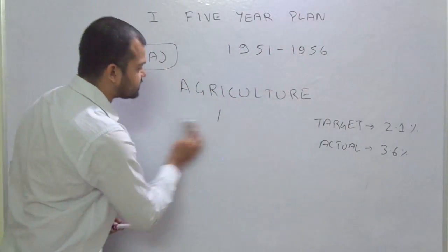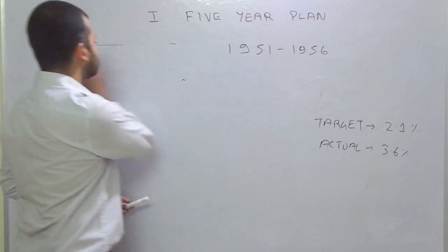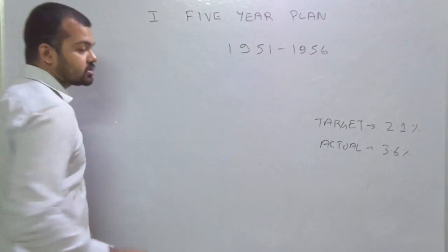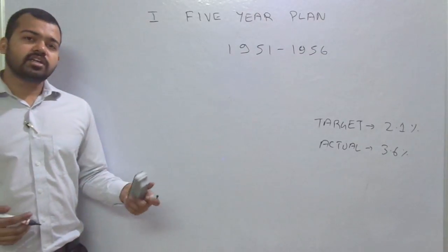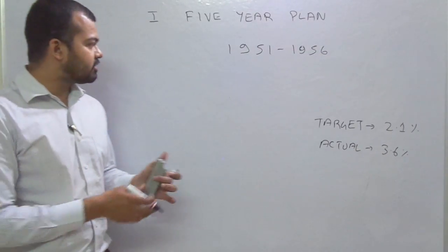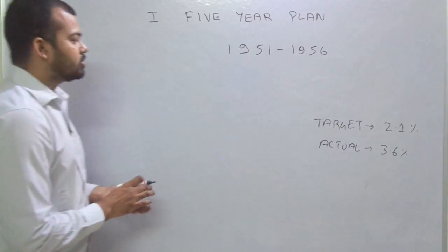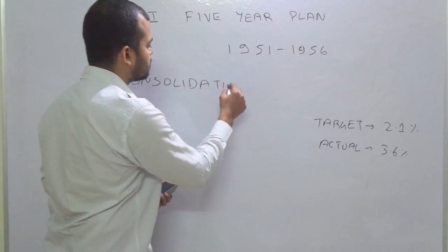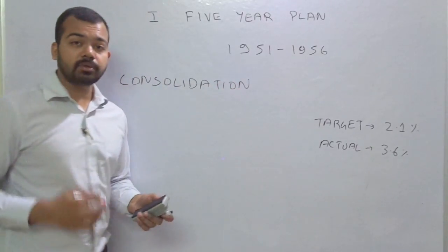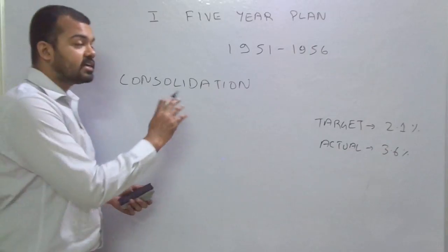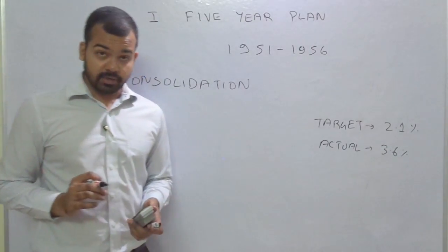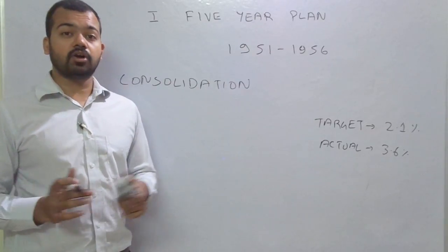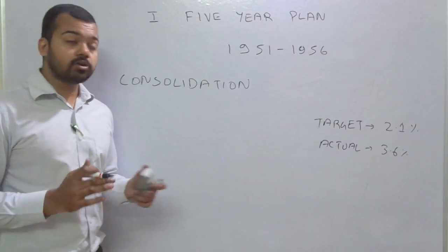Other than agriculture, the government focused on reconstruction of our economy. Because due to partition and second world war, Indian economy was severely affected. So first is consolidation and Pan India integration of Indian economy. Because after the partition, we needed to integrate our economy and also our boundaries of country.